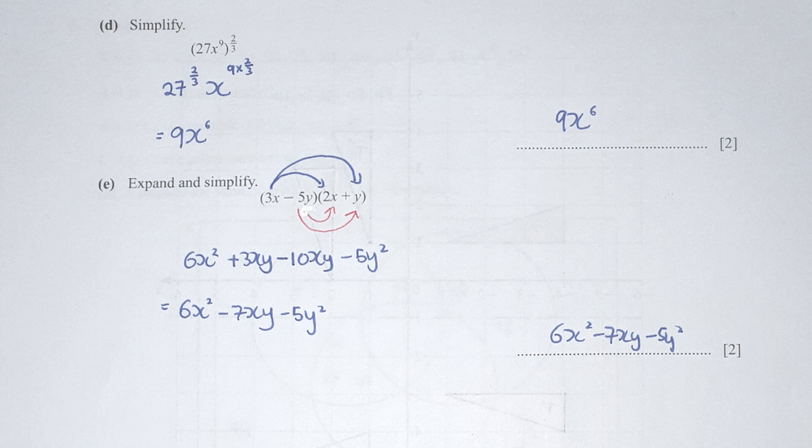Expand and simplify: 3X multiplied by 2X, 3X multiplied by Y, negative 5Y multiplied by 2X, and negative 5Y multiplied by Y. After the calculation, you get 6X squared minus 7XY minus 5Y squared as the final result. You can't factorize this further, so leave it as is.